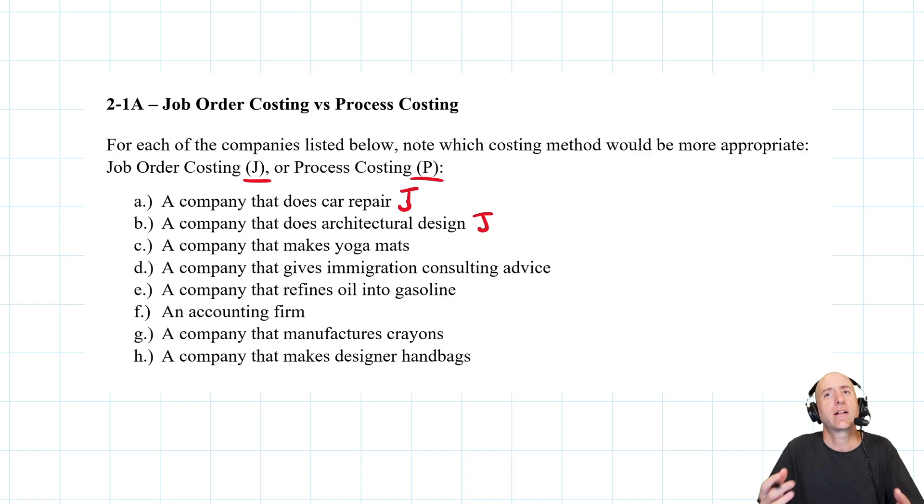A company that makes yoga mats: they're not making the yoga mat custom for me. I go to the store, I pick the yoga mat off the shelf. They're making hundreds and hundreds of yoga mats at a time. This is process costing.